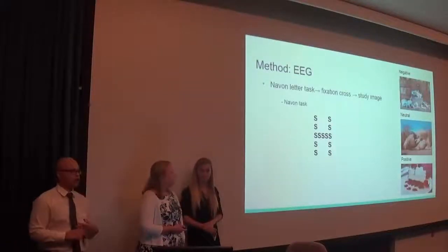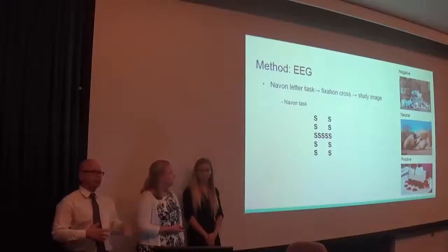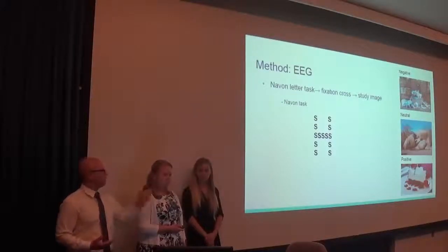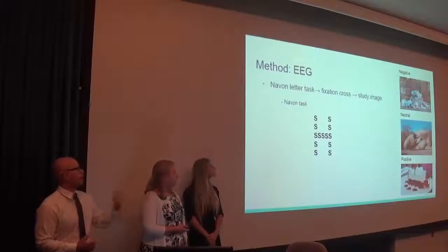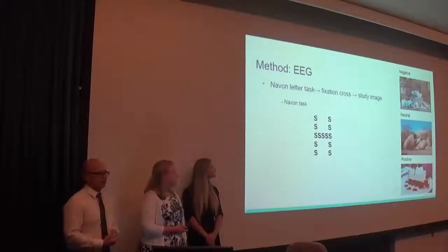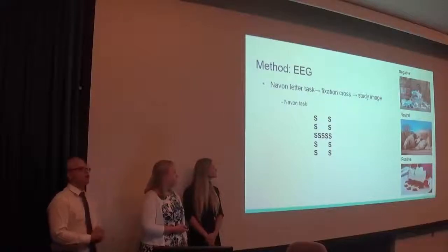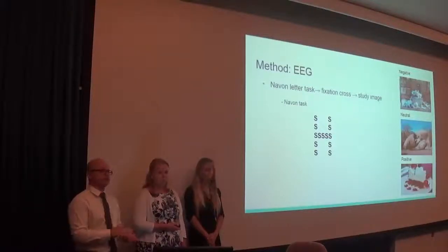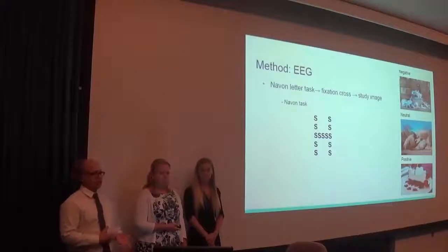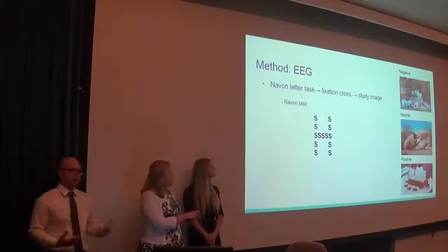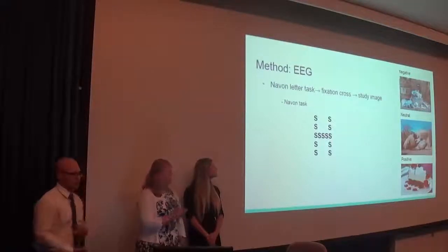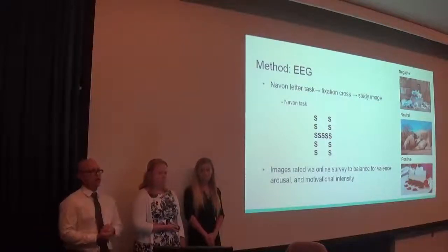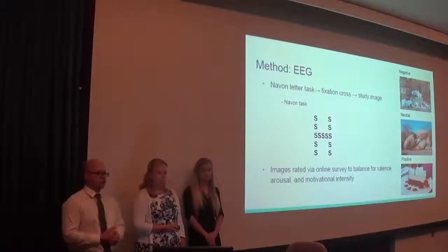For the EEG method, we had participants wear the EEG cap and recorded electrical activity. Participants looked at a Navon letter test and identified the smaller letter — such as the S — which primed them for narrowed attention, standardizing attentional scope. Then they looked at a fixation cross, followed by study images that were negative, neutral, and positive. The images were rated via an online survey, and we tried to standardize for valence, arousal, and motivational intensity.